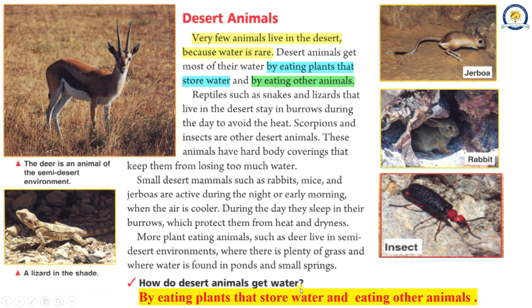How do desert animals get water? By eating plants that store water and eating other animals.